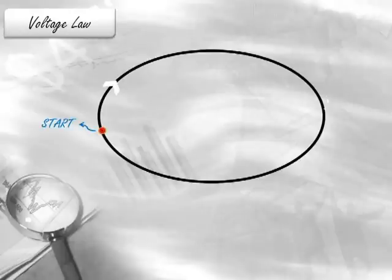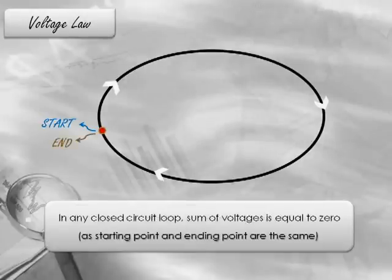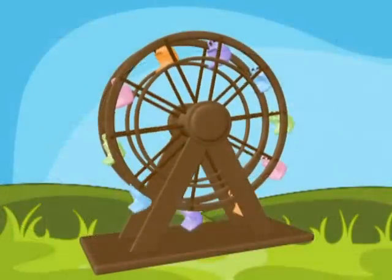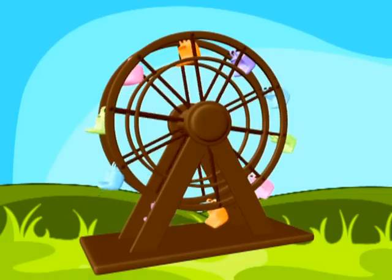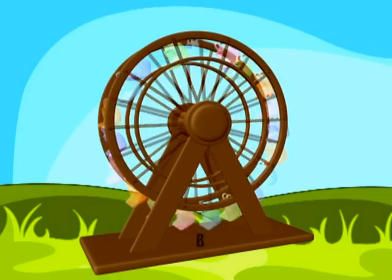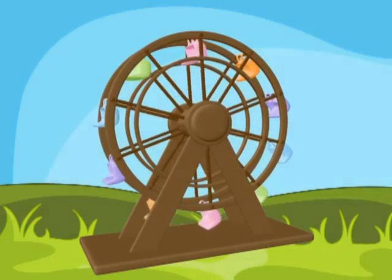The voltage law says that in any closed loop, the sum of voltages must be equal to zero. This should make sense as electric potential is dependent on the location of a point. In any closed loop, the starting point and the ending point are exactly the same and therefore the net potential difference must be zero. It's just like riding a ferris wheel — you start at the bottom, go all the way up, and end up right where you started.